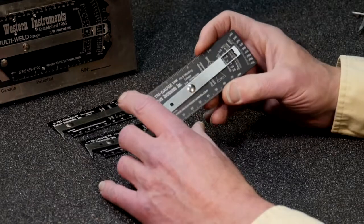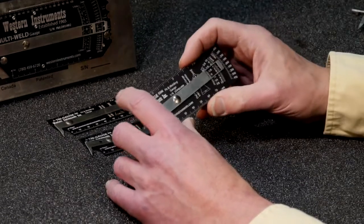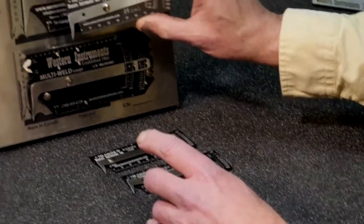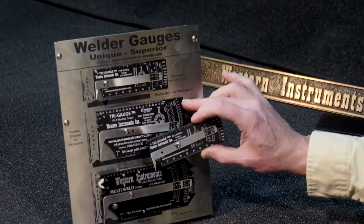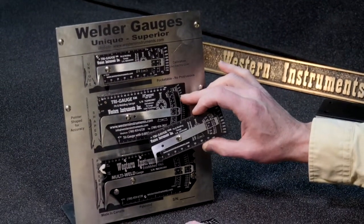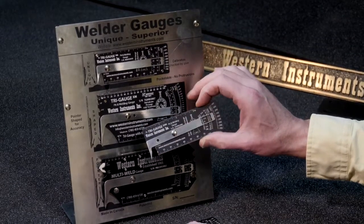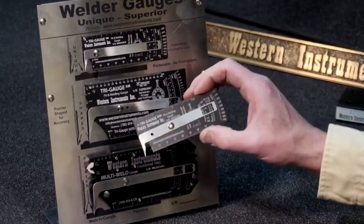So now you can have different colors of tri-gauge. The original tri-gauge, which is plus or minus half an inch, five hundred thou, twelve and a half millimeters, with ten thou accuracy.